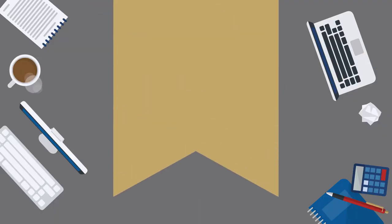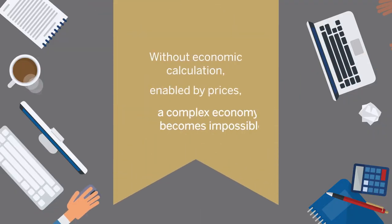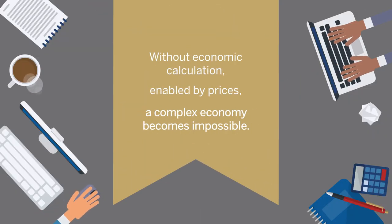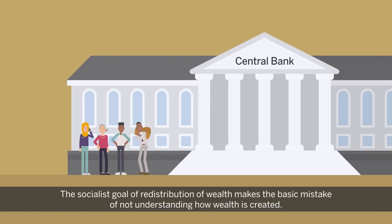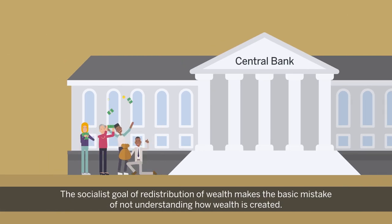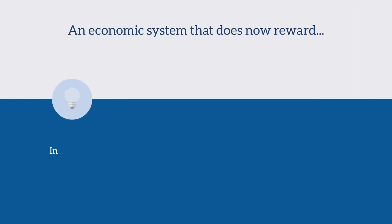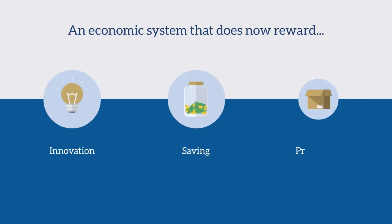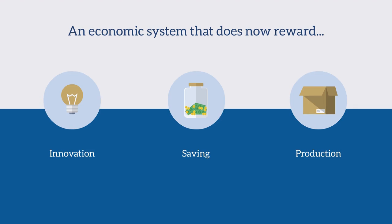Without economic calculation, enabled by prices, a complex economy becomes impossible. The socialist goal of redistribution of wealth makes the basic mistake of not understanding how wealth is created. An economic system that does not reward innovation, saving, and production will see the quality of life for everyone decline.